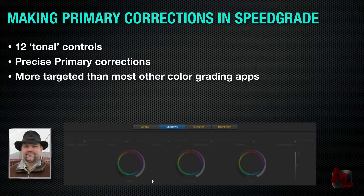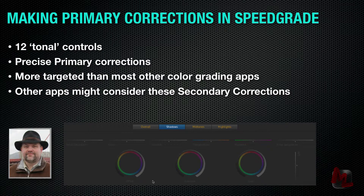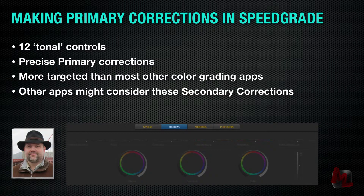One of the things you need to realize about SpeedGrade is that it kind of bends the notion of what's a primary and what's a secondary. It bends these notions because there's so much precision here just in its primary tools. There are other apps that, if they were to implement this three-way color corrector, might talk about them more as secondary corrections than as primary corrections. Here in SpeedGrade, I still consider these to be primary controls, even though I can go in and limit my controls to one of these tonal ranges — I still consider them to be overall corrections to the image.